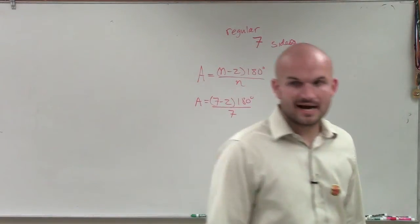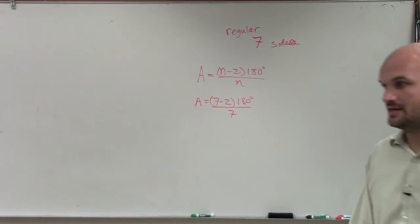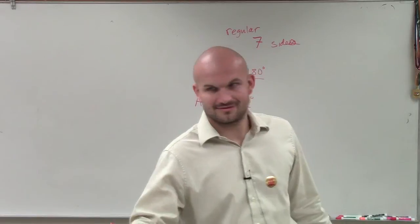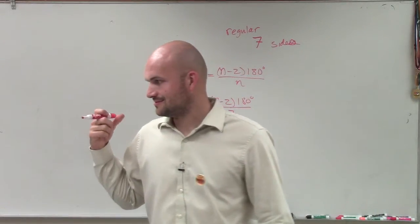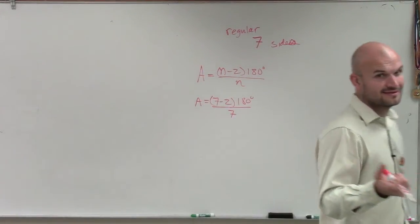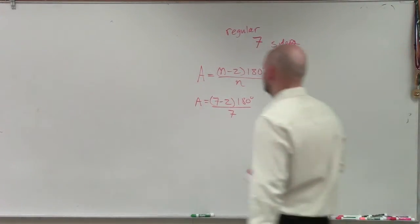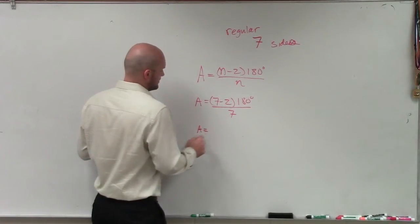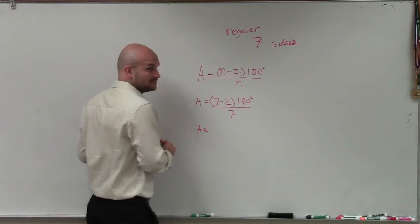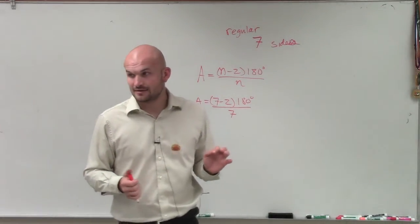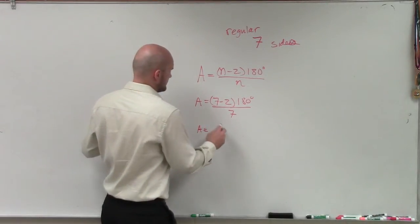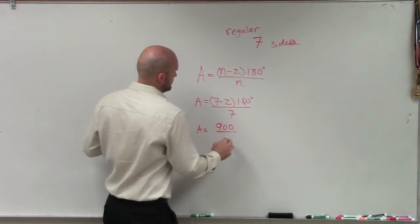So 5 times 180 is 900. So I have A equals 5 times 180. Because 4 times 180 would be 720, so then we have 900 divided by 7.